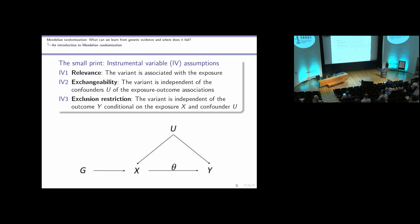The three IV assumptions are: first, the relevance assumption — the genetic variant predicts exposure X; second, the exchangeability assumption — the variant G is independent of confounders U; and third, the exclusion restriction assumption — the variant is independent of outcome Y conditional on exposure X and U, meaning there is no other pathway connecting G to Y other than via X.